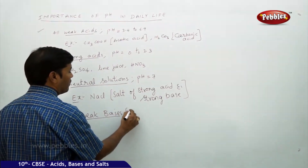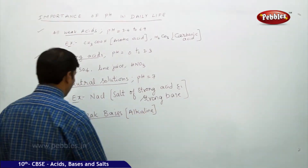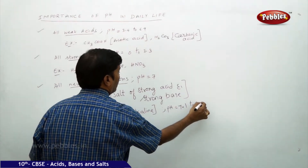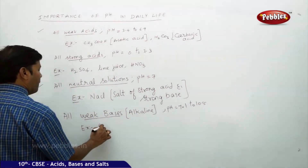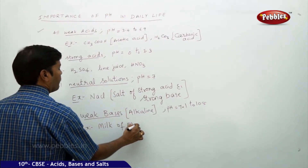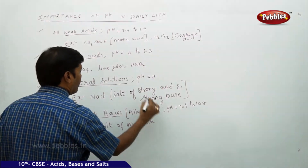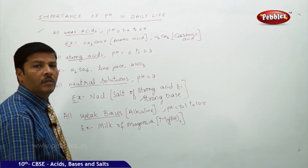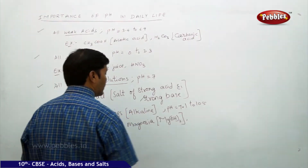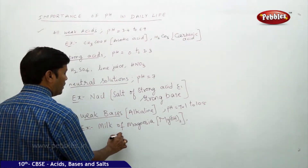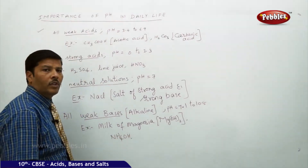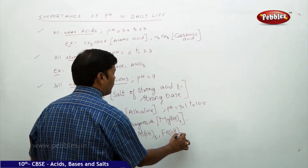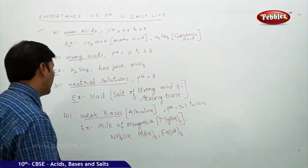All weak bases are weakly alkaline. Their pH is from 7.1 to 10.5. Examples include milk of magnesia (magnesium hydroxide), ammonium hydroxide, aluminum hydroxide, and ferric hydroxide. All metal hydroxides are weakly alkaline bases.